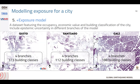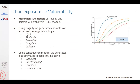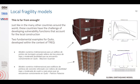When moving from urban exposure to vulnerability, it means that for each one of those building classes you need to have a vulnerability curve to associate to. In the case of TREC, we made use of the Global Vulnerability Catalog developed by the GEM Foundation. This allowed us to estimate damage at different damage states for each building class. We also used consequence models in accordance with what decision makers and risk officers in each city were interested in — metrics of displaced people, gravely injured fatalities, which go beyond just estimating economic losses.